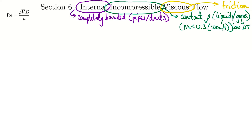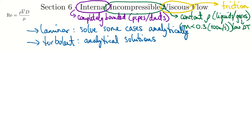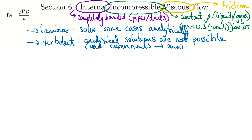Another very important concept in section 6 is the difference between laminar and turbulent flows — we treat these two types of flows very differently. The section is broken down by first looking at laminar flows, because they're simpler and lend themselves to mathematical analysis — some laminar cases can be solved analytically. Turbulent cases are much more chaotic, so analytical solutions aren't possible. Even with high-end modeling, it remains unsolved. We rely on experiments and empirical relations for turbulent flows.